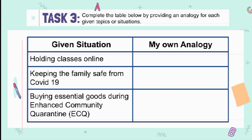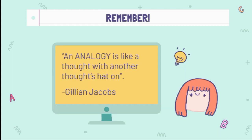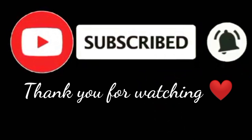For our last task, complete the table below by providing an analogy for each given topic or situation. The given situations are: holding classes online, keeping the family safe from COVID-19, and buying essential goods during enhanced community quarantine (ECQ). Comment down below your answer. Remember, 'an analogy is like a thought with another thought's hat on' — Jillian Jacobs. I hope you learned a new lesson for today. Goodbye everyone, this is Teacher Judea. Thank you.